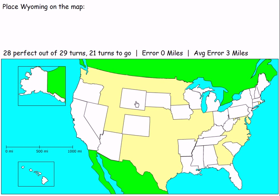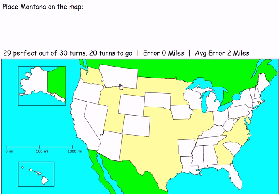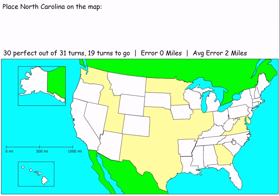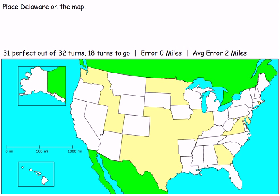Wyoming right here, because that's the thing that creates the notch on Utah. Montana right here. North Carolina right there. Delaware — look at how tiny you are, Delaware. Wait until you get Rhode Island — it's just a little speck. Delaware, where did you go? You go down here, but where down here? This is Virginia, that's Maryland, so you have to go right here.